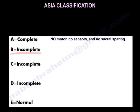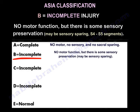B is incomplete. It means you have sensory but no motor function preserved below the neurologic level. The sensation may be just sacral sparing — S4 and S5 segments.